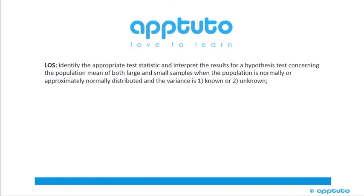This learning objective is to identify the appropriate test statistic and interpret the results for a hypothesis test concerning the population mean of both large and small samples when the population is normally or approximately normally distributed and the variance is known or unknown.